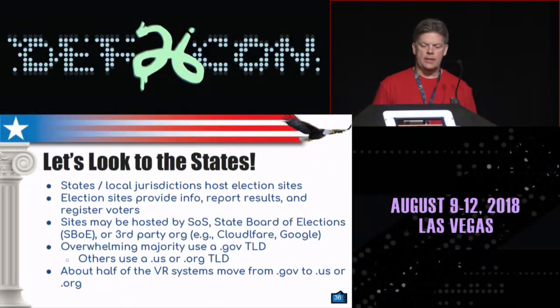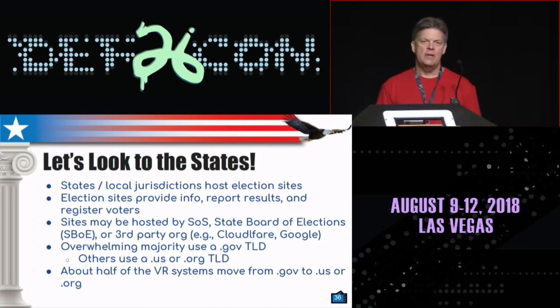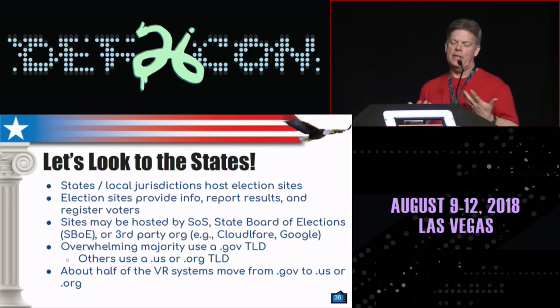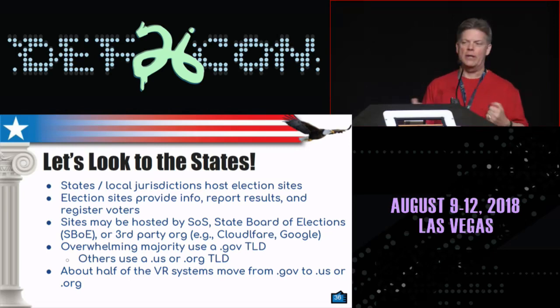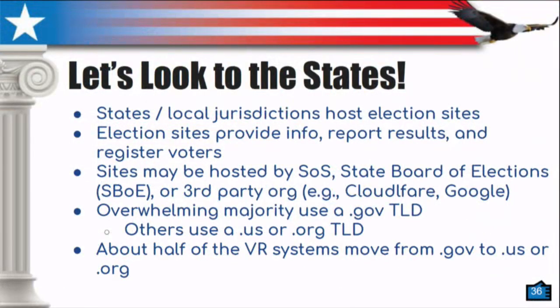Let's look to the states. The states and local jurisdictions also have websites. Those election websites provide information, results, and they help register voters. The sites could be hosted by the Secretary of State, the State Board of Elections, or some other third-party group like Cloudflare or Google. The overwhelming majority use a .gov top-level domain. Others use .us or .org TLDs. About half of the voter registration systems move from .gov to .us or .org — not sure why. It's a little chaotic there.